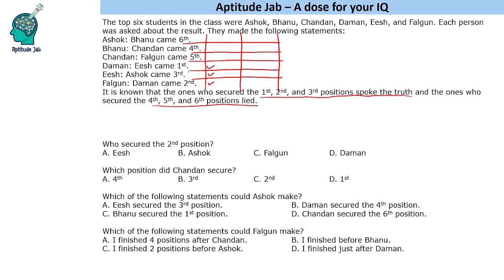If we assume these 3 statements to be true, then Ish came 1st, Ashok came 3rd, and Daman came 2nd. But by this logic, Ashok should also be a truth teller, because the 1st, 2nd, and 3rd people have to tell the truth. So this is not possible — we get a contradiction.